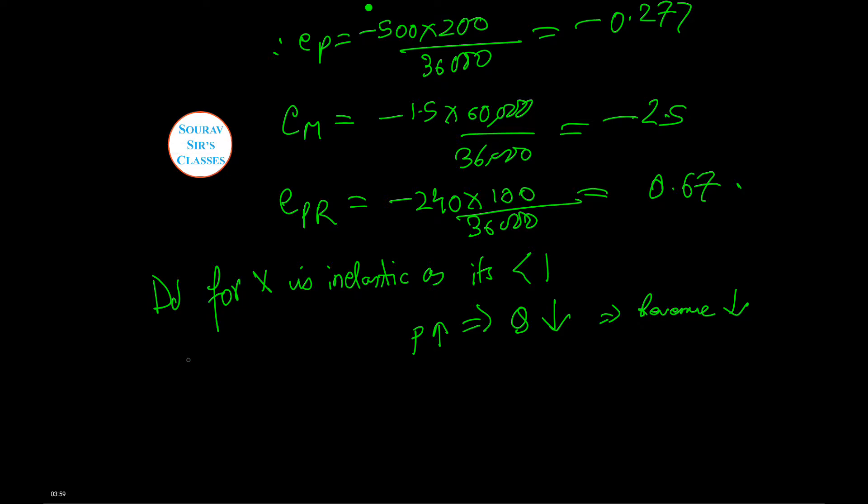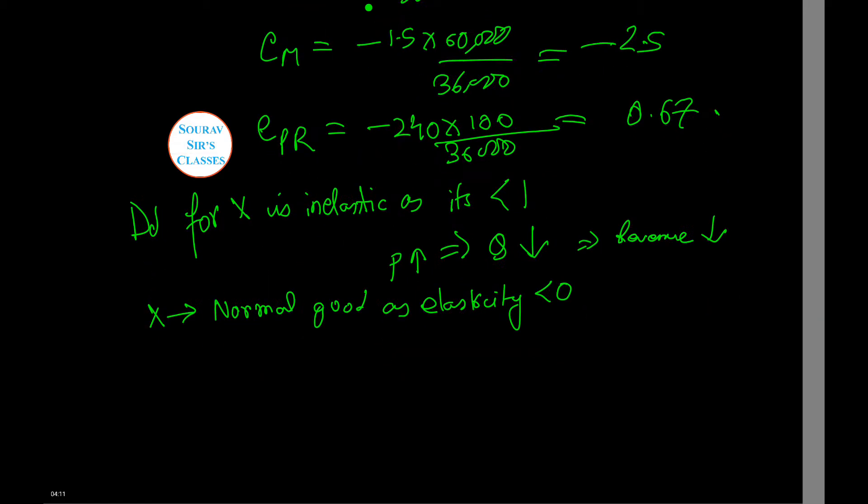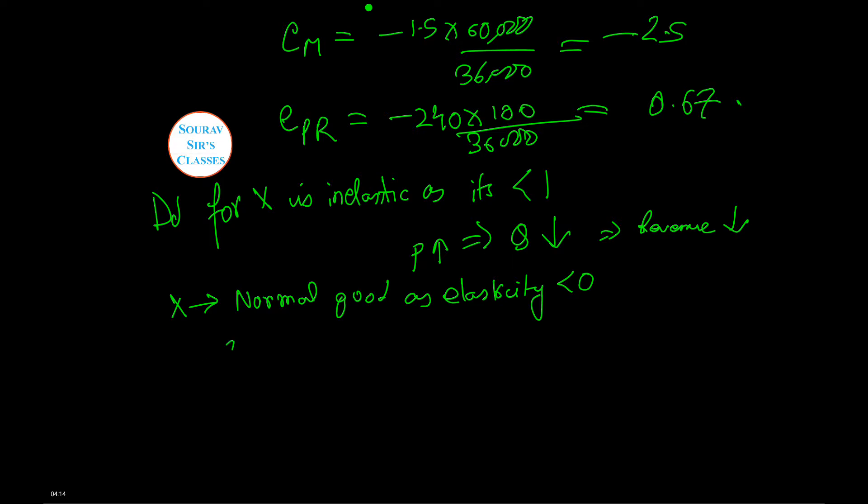Now good X is a normal good. We can understand this as income elasticity is less than 0 and is negative, whereas elasticity of Y with respect to X is greater than 0, that is the cross price elasticity. So they are clearly substitutes.